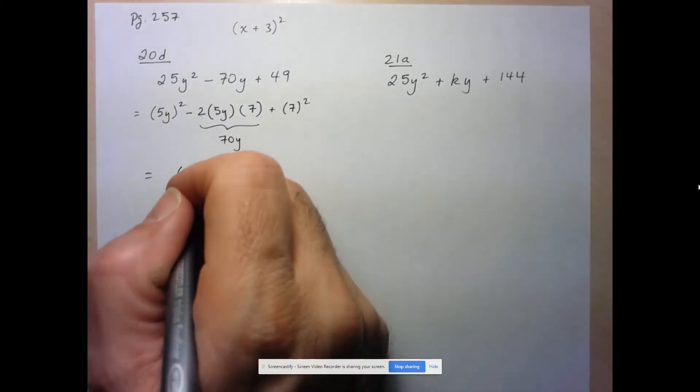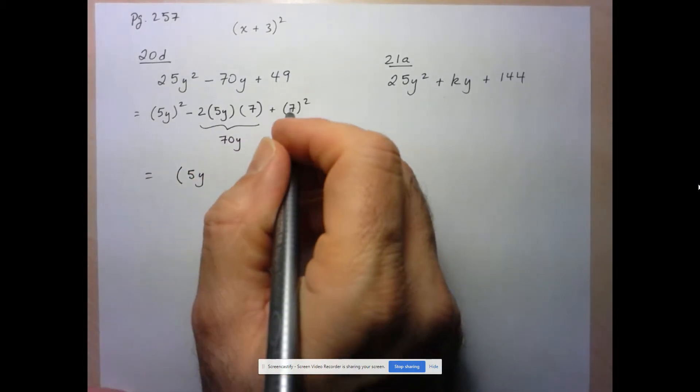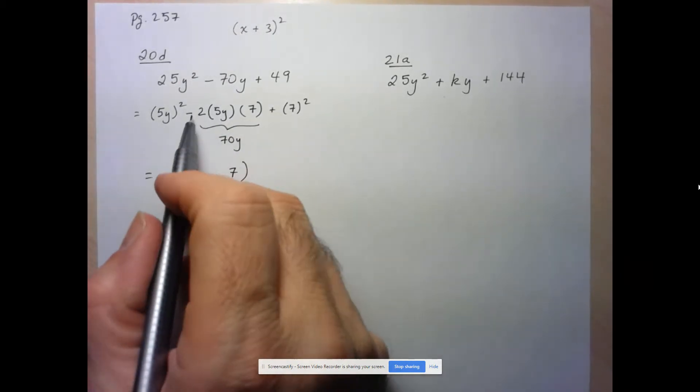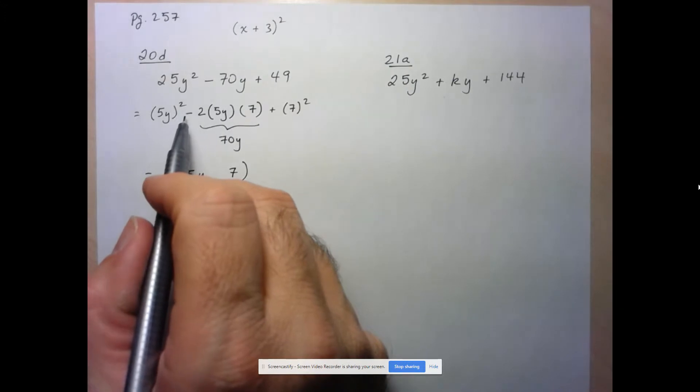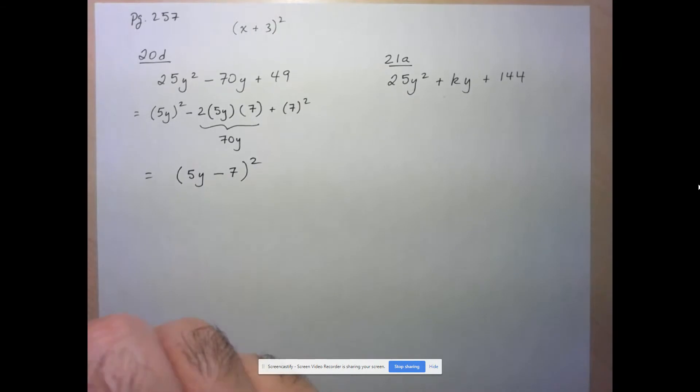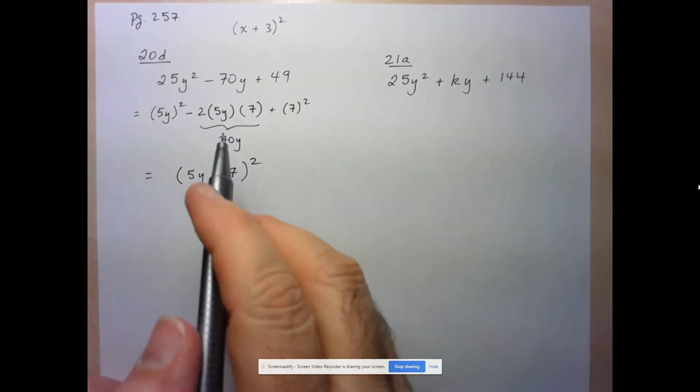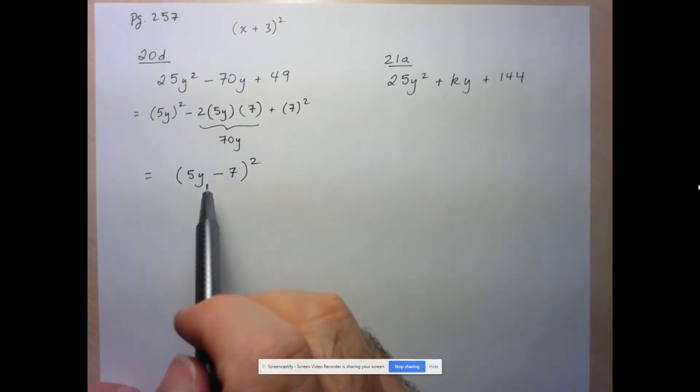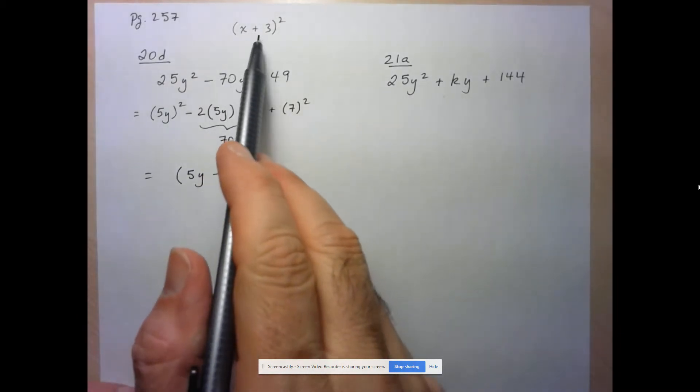Well, it's just going to be the first term is going to be 5y. The second term is going to be 7. Now here, because the middle terms have to add up to a negative number, it's going to be 5y minus 7 squared. And the way we could confirm that is that the three expressions fit the structure for the expansion of a perfect square.